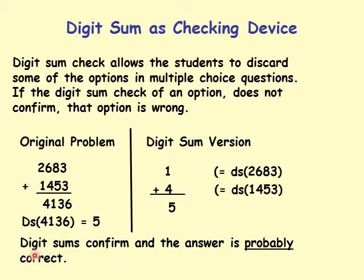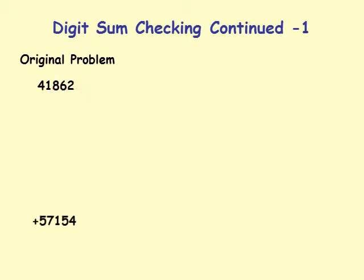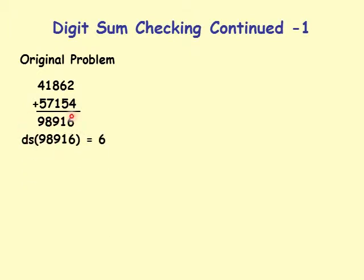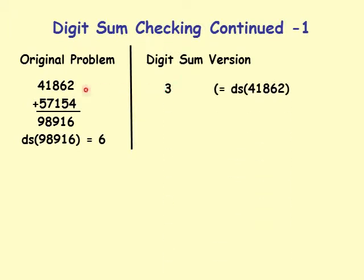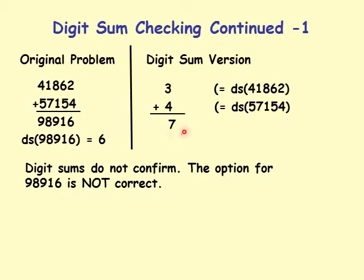An example where digit sum confirms but the answer is wrong: digit sum of 98916 is 6. Digit sum version: digit sum of first number is 3, digit sum of second number is 4; 3 plus 4 equals 7. But 7 and 6 do not match — digit sum does not confirm, so this answer is wrong and can be eliminated from the multiple-choice options.